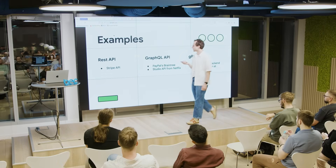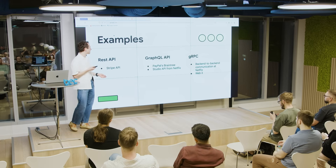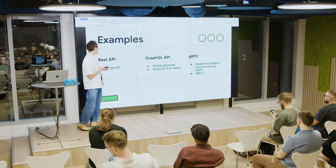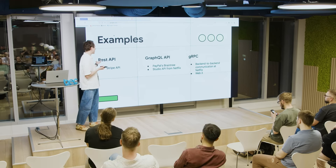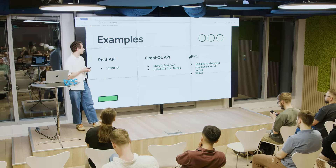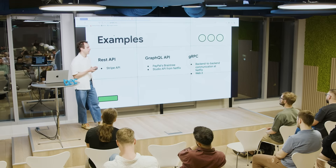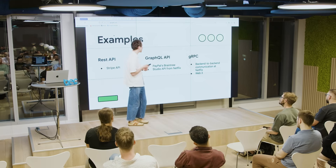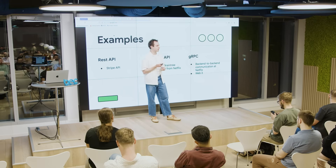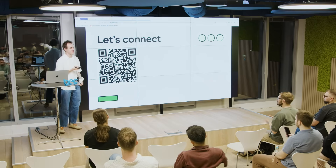Let's go briefly through real-world examples. REST API is used in Stripe API — it appears to be the golden standard. GraphQL API is more flexible — PayPal uses it, and it's used for the Studio API from Netflix. It's never an obvious choice. gRPC is mostly backend-to-backend communication — it's used in Netflix, and I see a lot of RPCs in Web3. I believe almost each request in Web3 is gRPC. So let's connect and I'm open to questions.